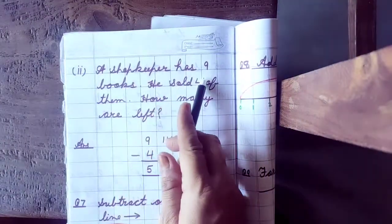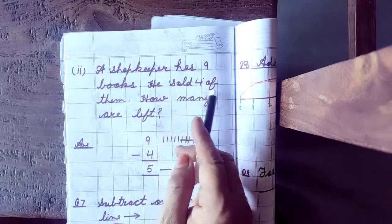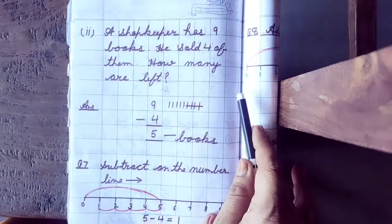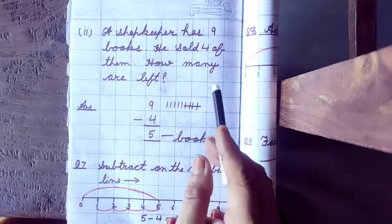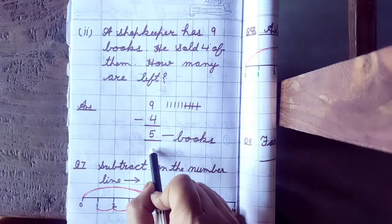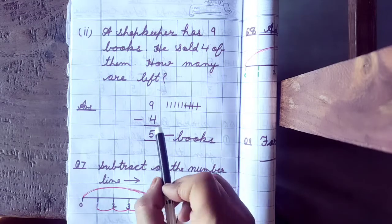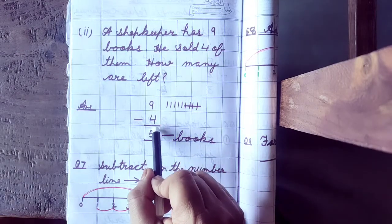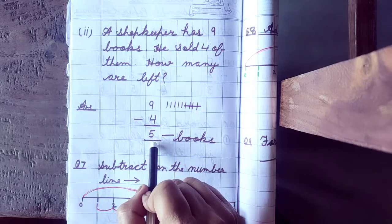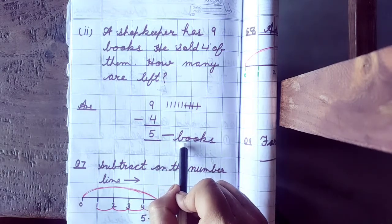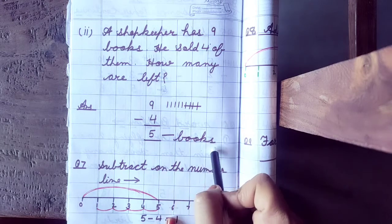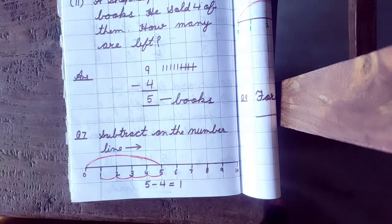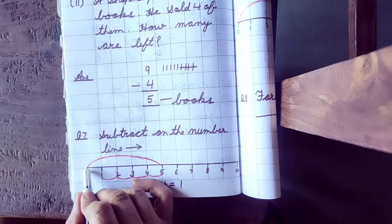Part 2: A shopkeeper has 9 books, he sold 4 of them — how many are left? We can subtract: 9 minus 4. The answer is 5. It means 5 books are remaining. You can also subtract on the number line.